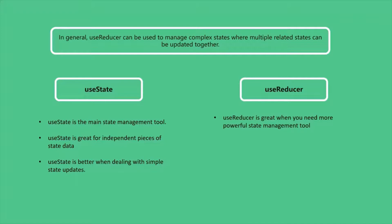When you do have an object as the state or some more complex state, useReducer might be interesting because in general useReducer is great if you need a more powerful state management tool. Using useReducer, we can create state updating functions which can contain complex state updating logic, where it is guaranteed that you always work with the latest state snapshot and where you can move that potentially more complex logic out of your component function body into a separate reducer function.